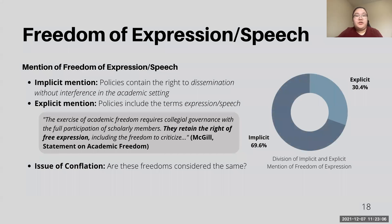For our analysis, we looked at two aspects. The first is the mention of freedom of expression and academic freedom policies. This aspect was divided into two categories: implicit mention and explicit mention. All institutions had an implicit mention to some degree, meaning that academic freedom policies contained the right to disseminate without interference in the academic setting. As you can see in the graph on the right, about 30% had academic freedom policies that explicitly use the terms expression or speech.